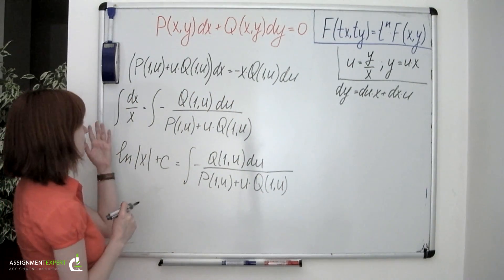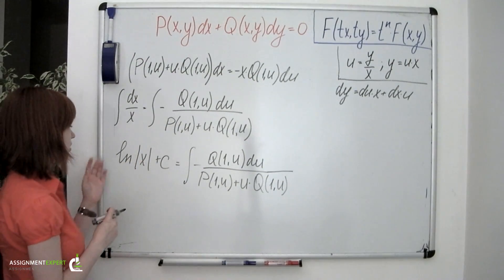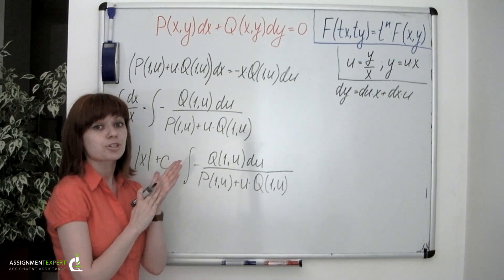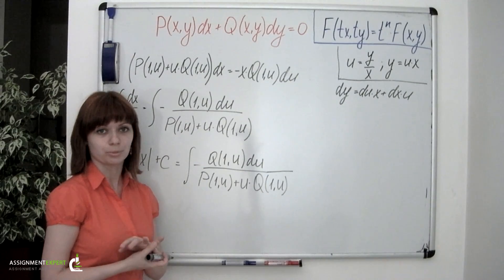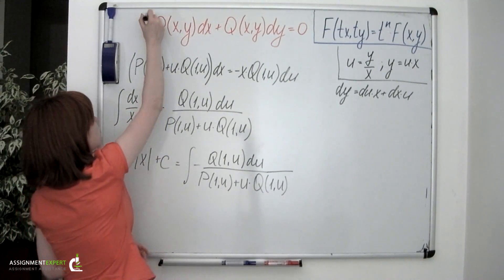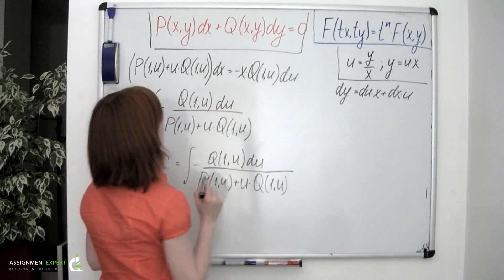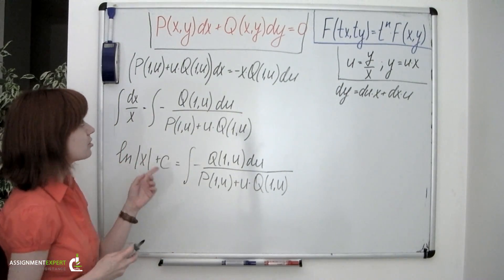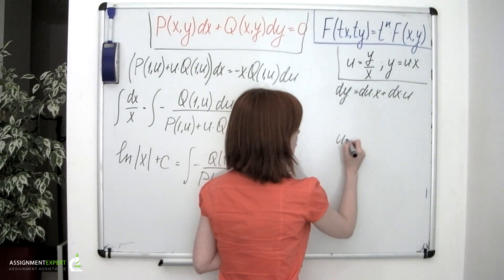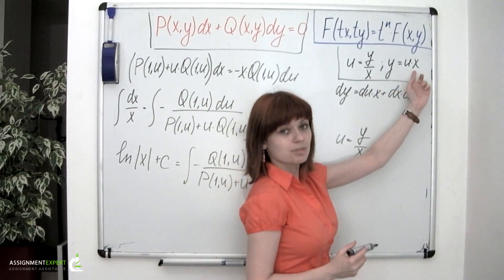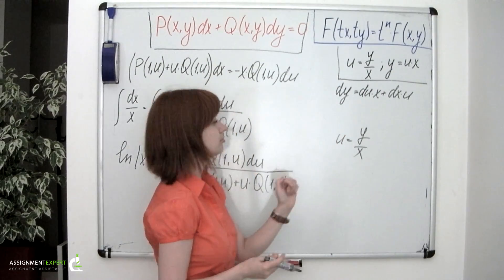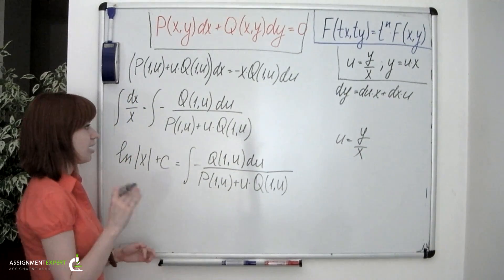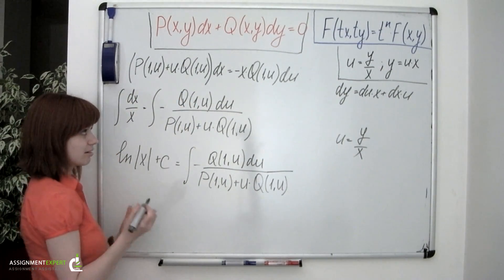When solving homogeneous first-order differential equations, you will notice that the answers involve ln of the absolute value of x. The algorithm is: first, put the equation in standard form; check if P and Q are homogeneous of the same degree; introduce the new variable u equal to y over x, so y equals ux and dy is found as a differential of a product; obtain a separable equation and solve for u; then return to y by multiplying the answer by x.